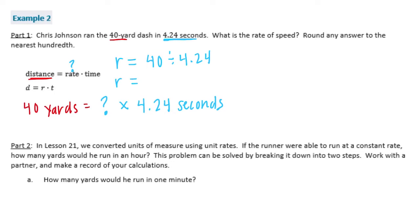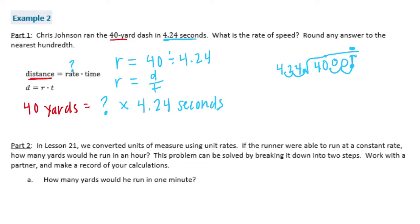The rate equals distance divided by time. To do 40 divided by 4.24, we need to move the decimal point to make the divisor a whole number, so it becomes 424. Then move the decimal in the dividend over two places and bring it straight up — that's a throwback from fifth grade dividing decimals, now applied to real life.